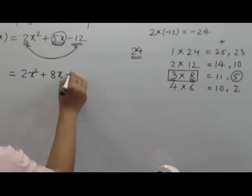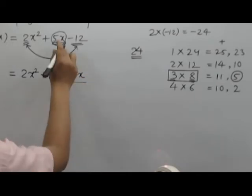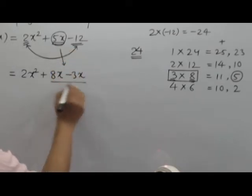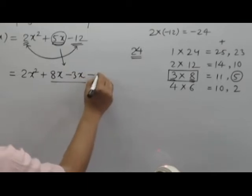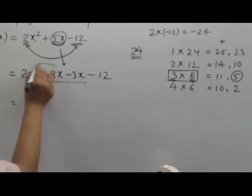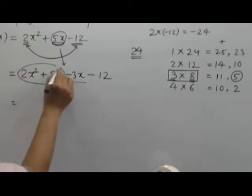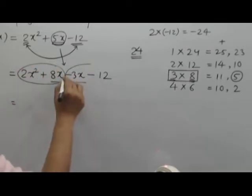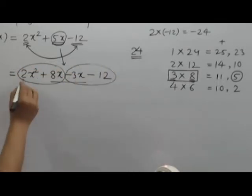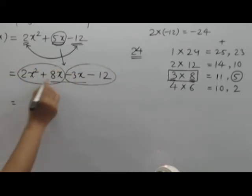So we can write this as: 2x² + 8x - 3x - 12. Now we will make 2 pairs — this is pair 1 and this is pair 2.